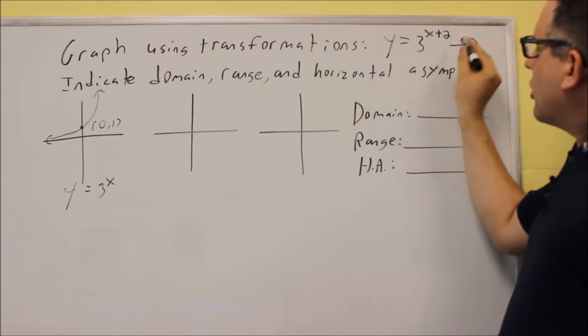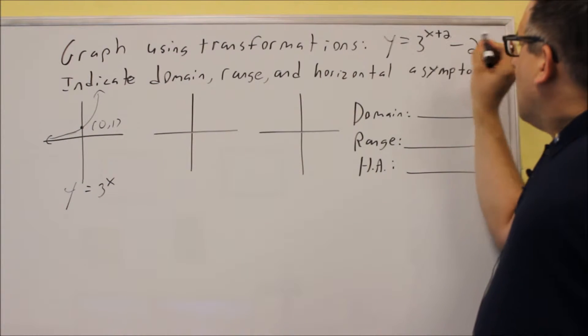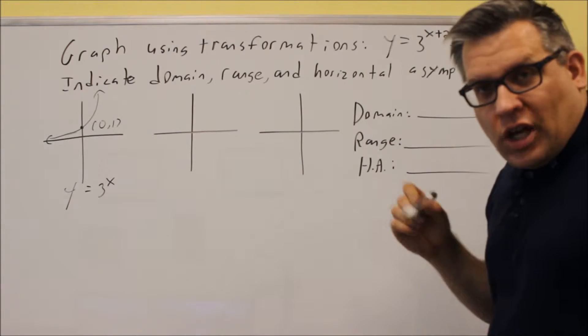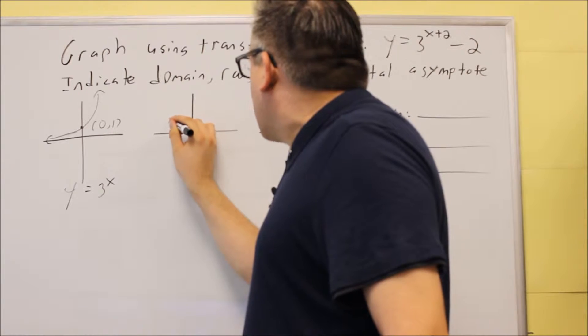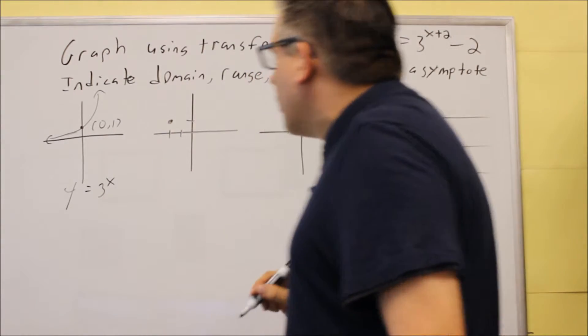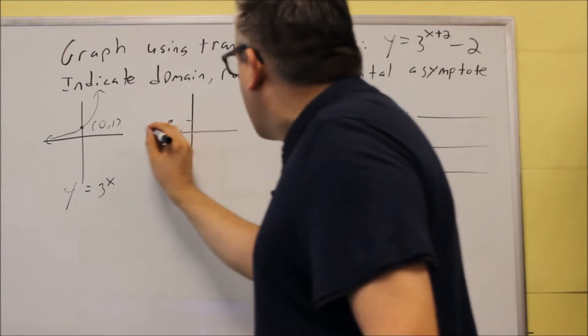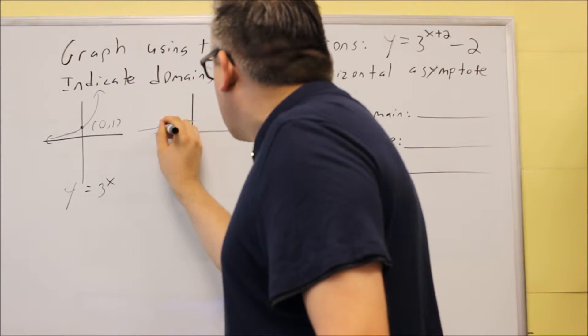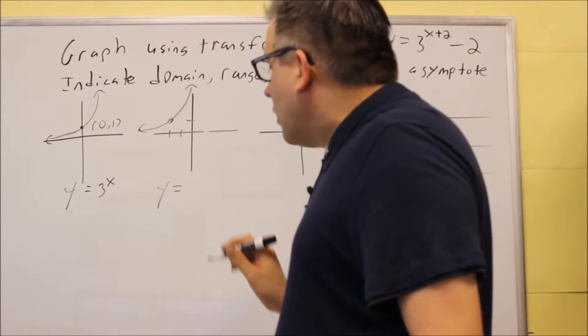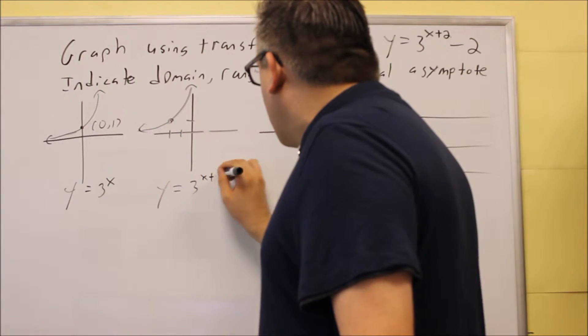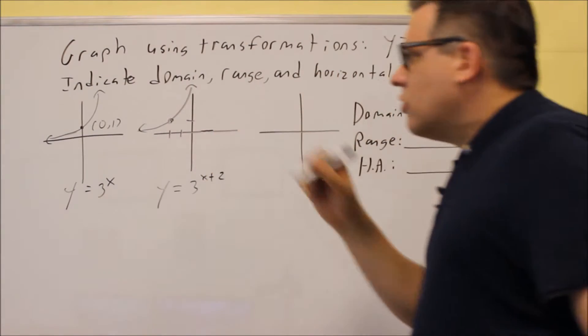Okay, so we'll start with the exponent. Again, the plus 2 means we move the graph two places opposite direction. So instead of going to the right, we're going to go to the left. We're going to take this point at 0, 1, and that's now going to move it two places over to here. So the whole graph actually shifts two places over to the left. So now the graph is going to still have the same shape, but it's now going to look something like this. If I label this one, this would be y equals 3 to the x plus 2.